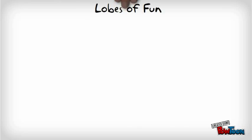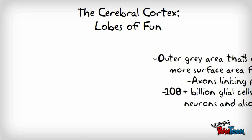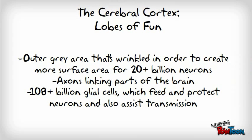We're going to be talking about the cerebral cortex. It consists of an outer grey structure that's wrinkled in order to create more surface area for more than 20 billion neurons, axons linking parts of the brain, and over 108 billion glial cells, which feed and protect neurons and also assist transmission.